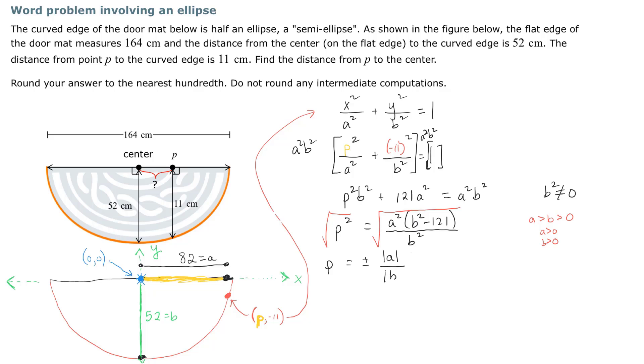We get P. It's now equal to plus or minus the absolute value of a over the absolute value of b times the square root of b² minus 121. Now it's very important that you know that a is greater than zero and b is greater than zero. That implies that the absolute value of a is a and that implies that the absolute value of b is b.